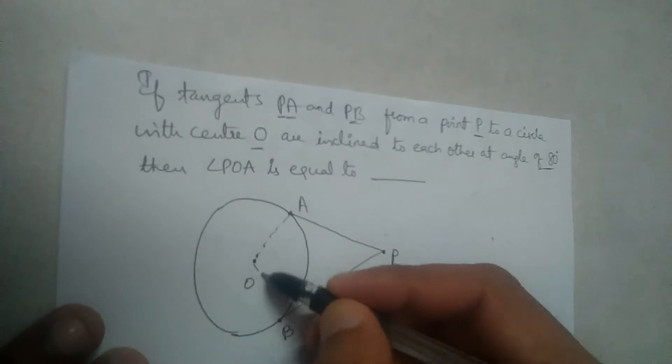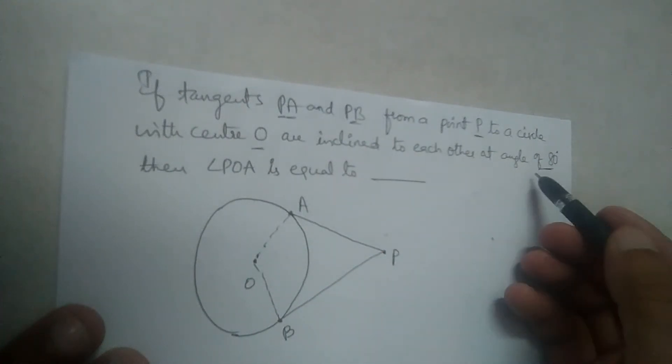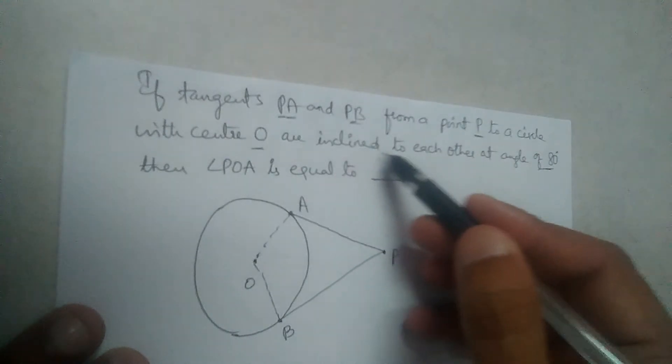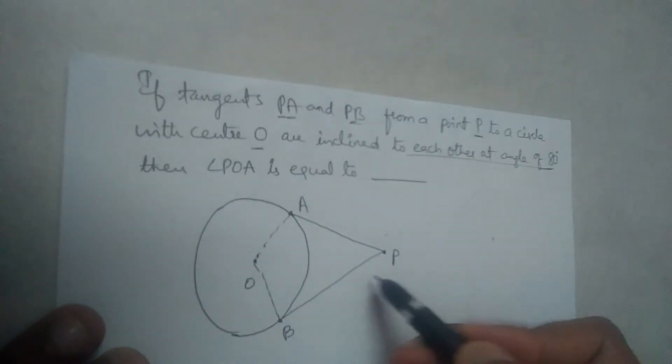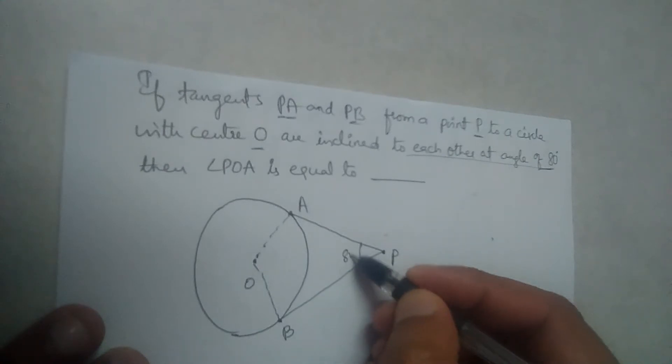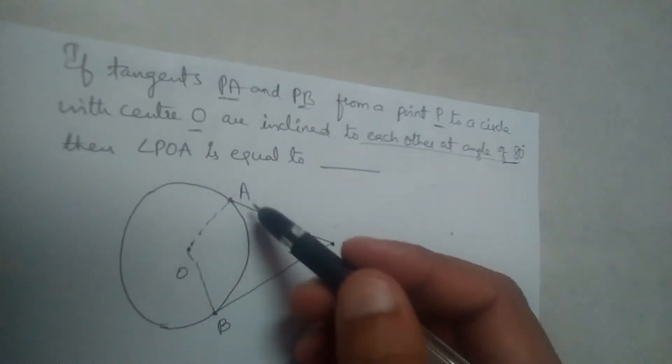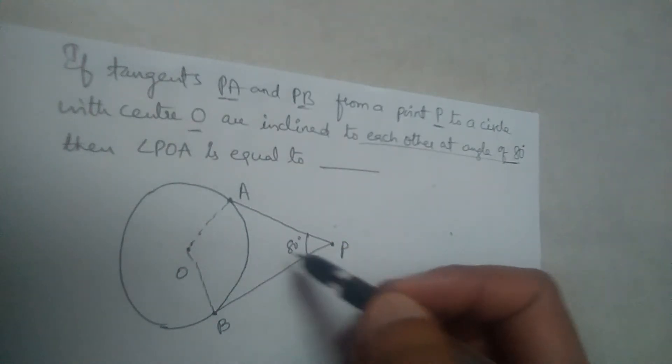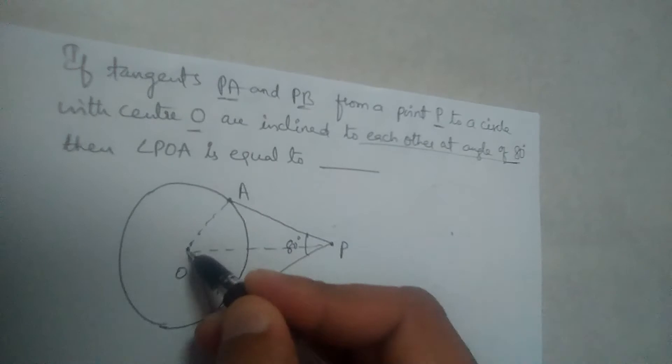So let us join this OA and OB. Now given that the tangents are inclined to each other at an angle of 80. So these are two tangents. The angle between the tangents is 80 degrees. We should find POA. We should find this part POA.